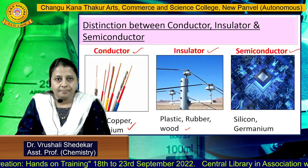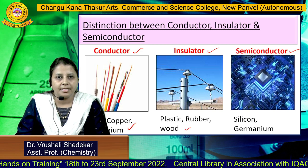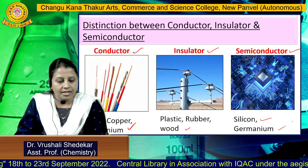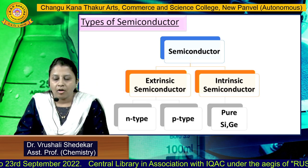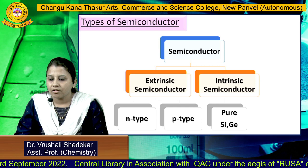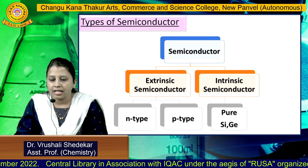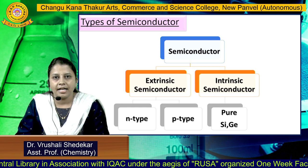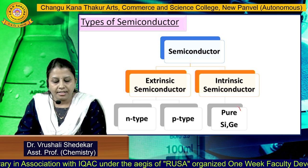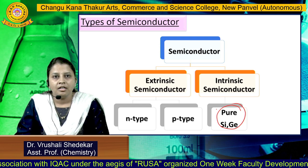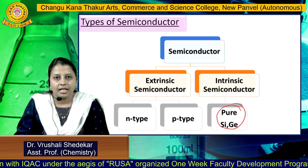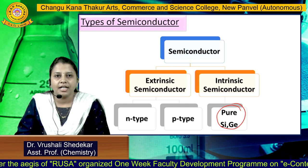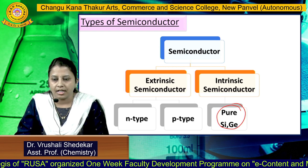In semiconducting materials, a very small band gap appears between the valence band and conduction band. The best examples are silicon and germanium. Intrinsic semiconductors are pure silicon and germanium, which act as insulators at nearly zero temperature but show some conductivity with rising temperature.